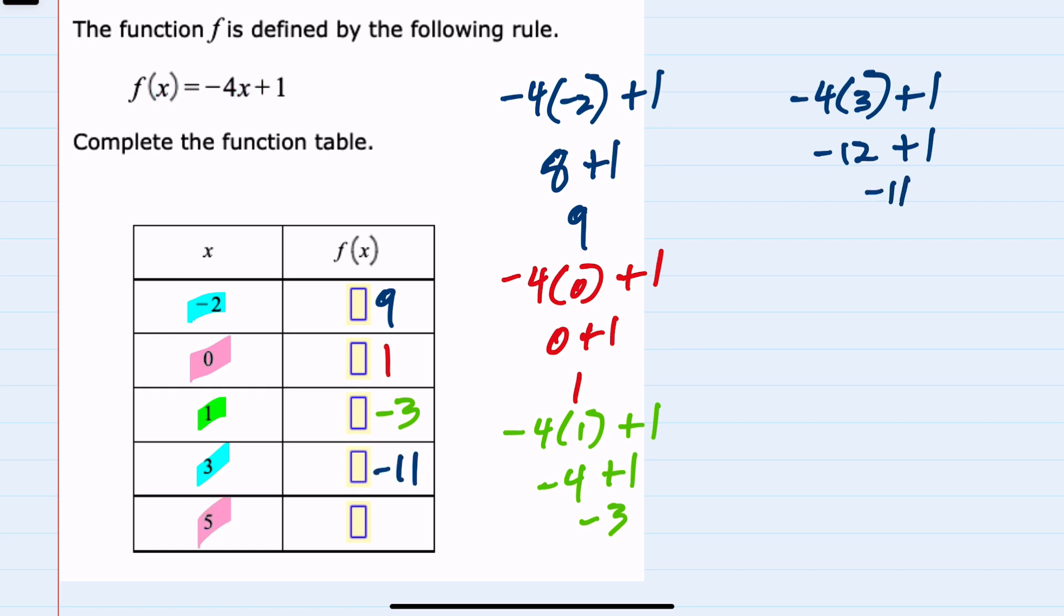And then lastly 5. f(5) replaces x with 5. So -4 times 5 plus 1 is -20 plus 1, or -19.